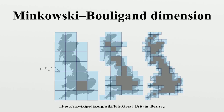Another equivalent definition for the box-counting dimension is given by a formula where, for each R greater than zero, the set is defined to be the R-neighborhood of S — the set of all points which are at distance less than R from S.